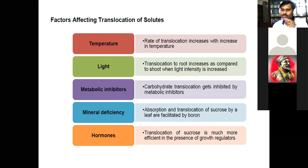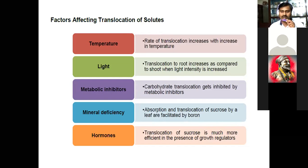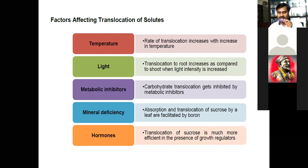Mineral deficiency: absorption and translocation of sucrose are facilitated by several mineral elements. Boron is needed in transport of substances. Some substances also move through the phloem, such as phosphorus, calcium, potassium, and magnesium — these are essential elements that can also move through the phloem, especially whenever the plant undergoes abscission.